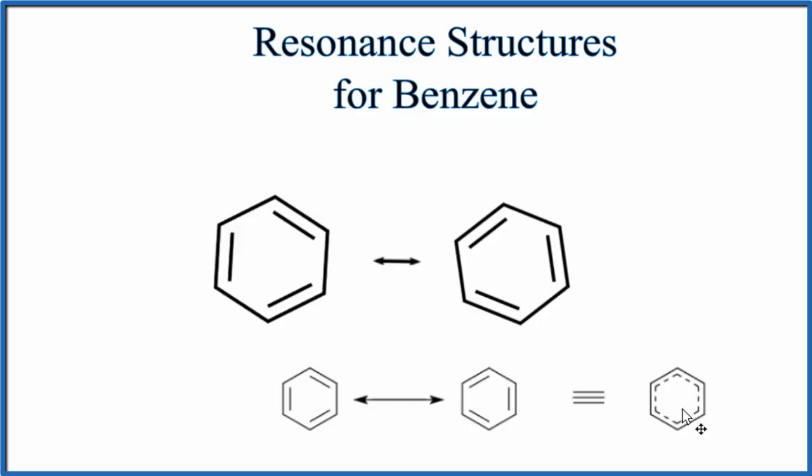If you were to measure the bond lengths, here you'd think you'd have different bond lengths between these, because they're some double bonds and single bonds. In the lab, if you measure it, all of the bond lengths between the carbons, they're the same. This is an average, essentially, of these two resonance structures.